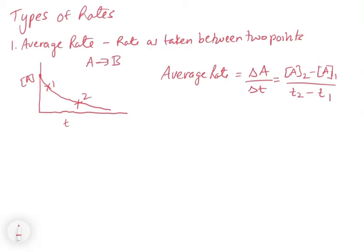In essence, what we're doing is we're drawing a straight line between these two points and figuring out what is the slope of that line. That's basically what you're doing with an average rate. And what that tells you is basically what's going on generally over a given period of time in a reaction.